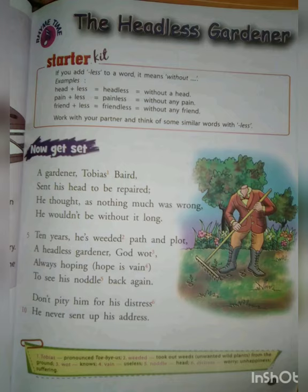You can easily find the rhyming scheme — the last word of the first line and the last word of the second line sound similar. That means the pronunciation of those two last words of consecutive lines is very similar. For example, 'A gardener, Tobias Baird' — first line, last word: Baird. 'Sent his head to be repaired' — last word of the second line: repaired. Baird and repaired sound equal and the same, so that's why these two are rhyming.